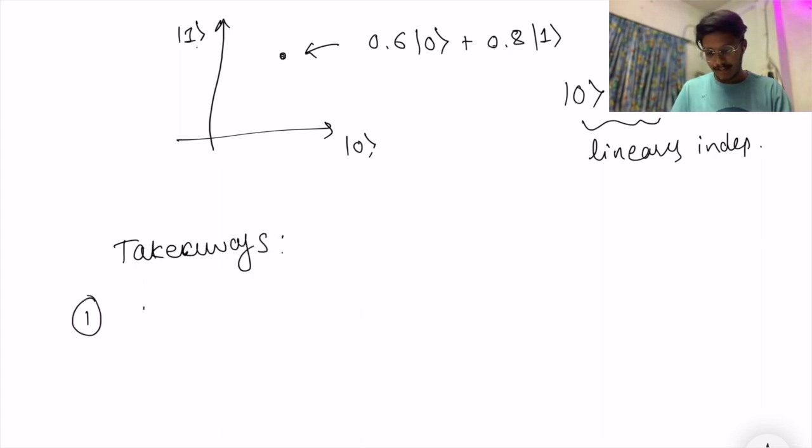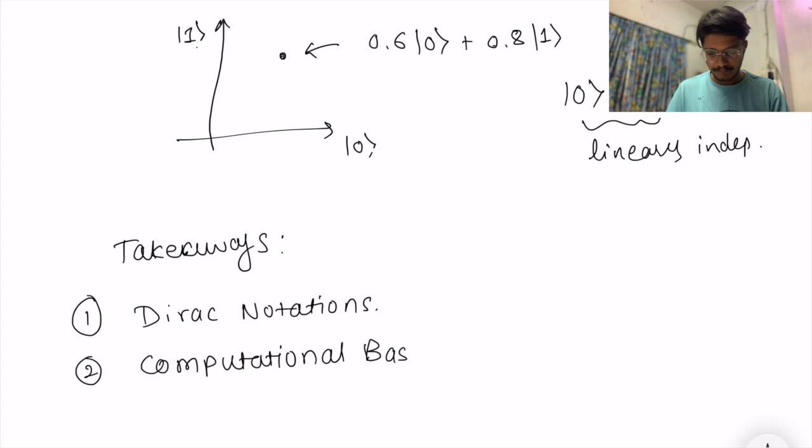First is Dirac notations. Second one is computational basis. Third one is vector space, and the final one is Hilbert space.